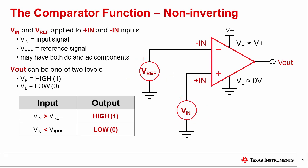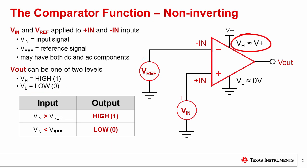These inputs may have both DC and AC components. The output voltage Vout can be set to one of two levels: a high level, or logic 1, or a low level, or logic 0. VH, the output high level, approaches V+, the positive power supply voltage. VL, the output low level, approaches 0 volts, or ground, or the negative supply in dual supply configurations.